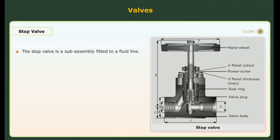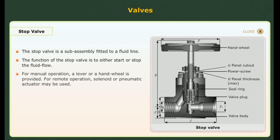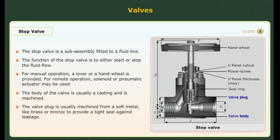Stop valve. The stop valve is a sub-assembly fitted to a fluid line. The function of the stop valve is to either start or stop the fluid flow. For manual operation, a lever or a hand wheel is provided. For remote operation, a solenoid or pneumatic actuator may be used. The body of the valve is usually a casting and is machined. The valve plug is usually machined from a soft metal like brass or bronze to provide a tight seal against leakage.